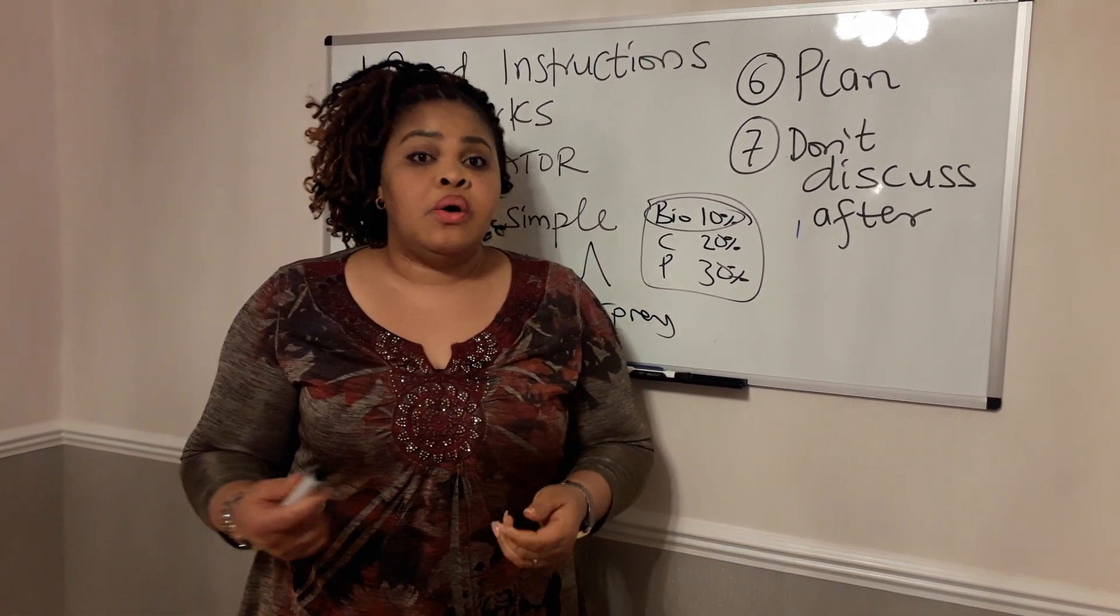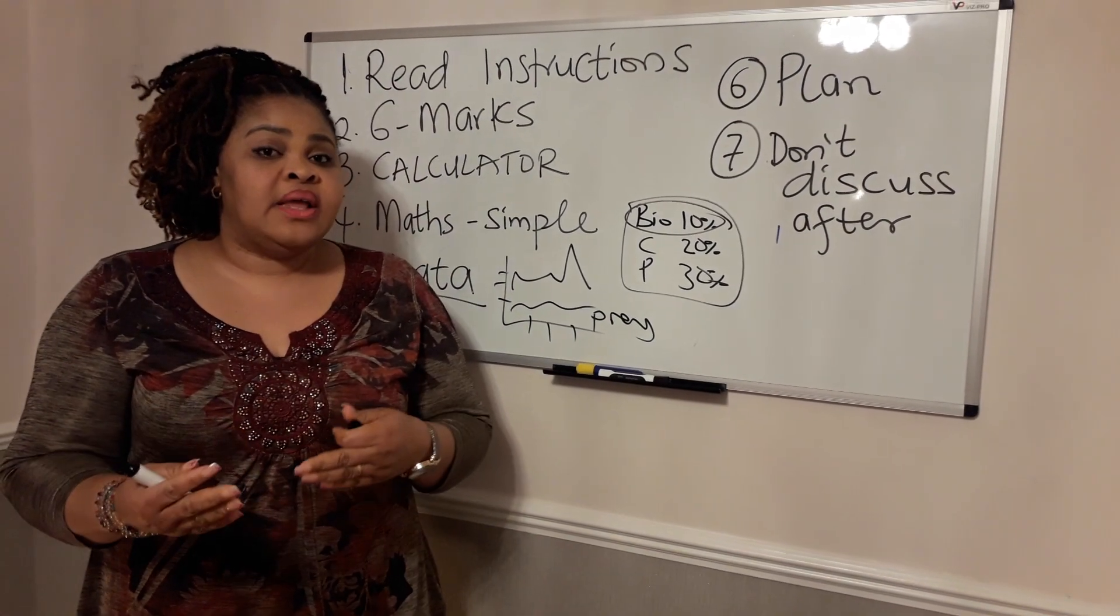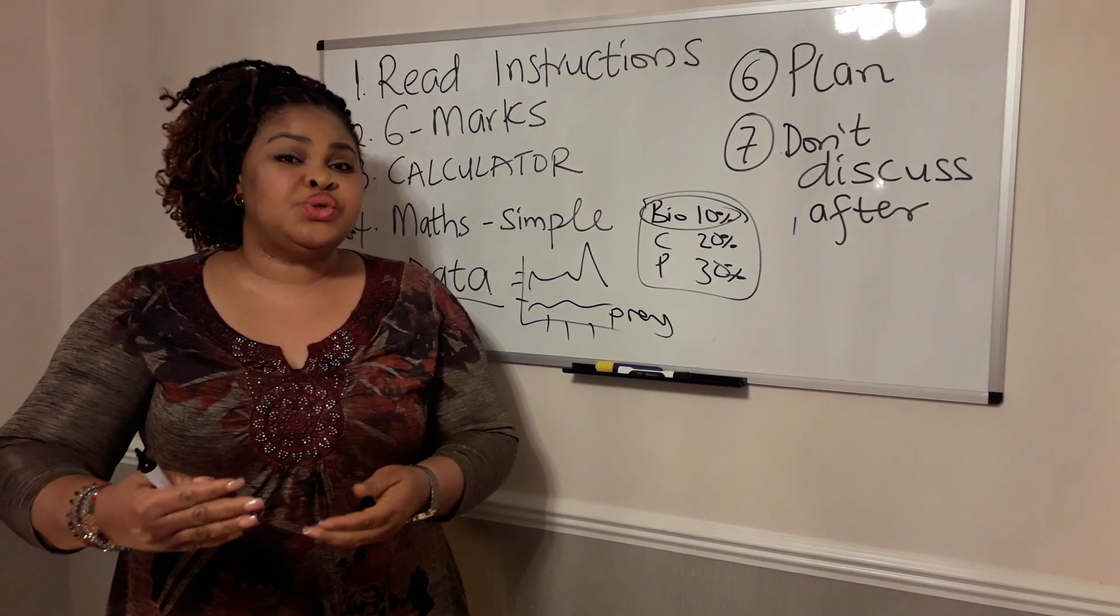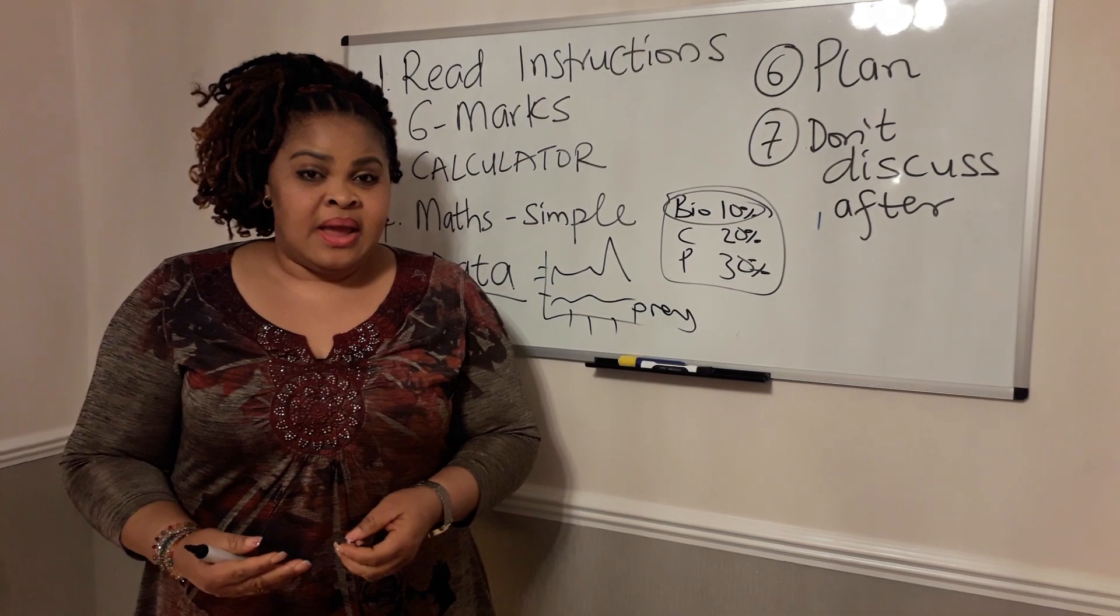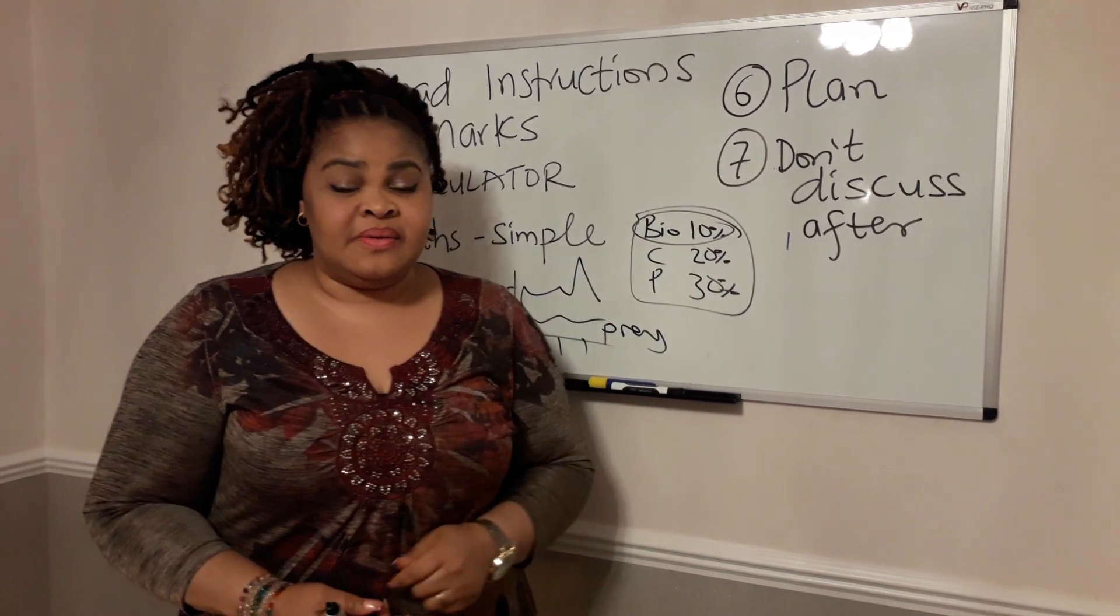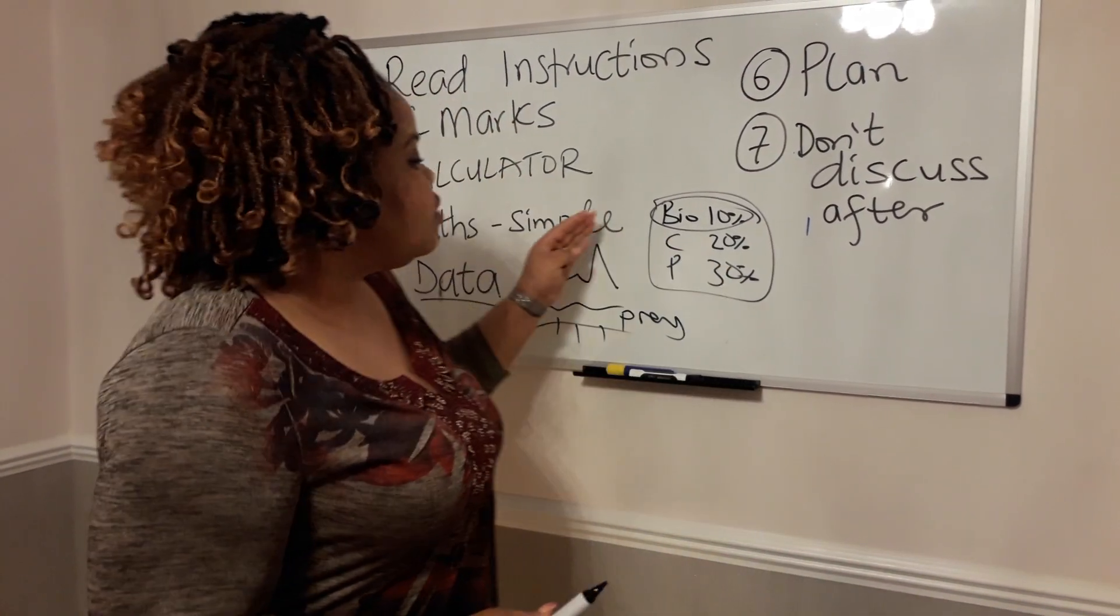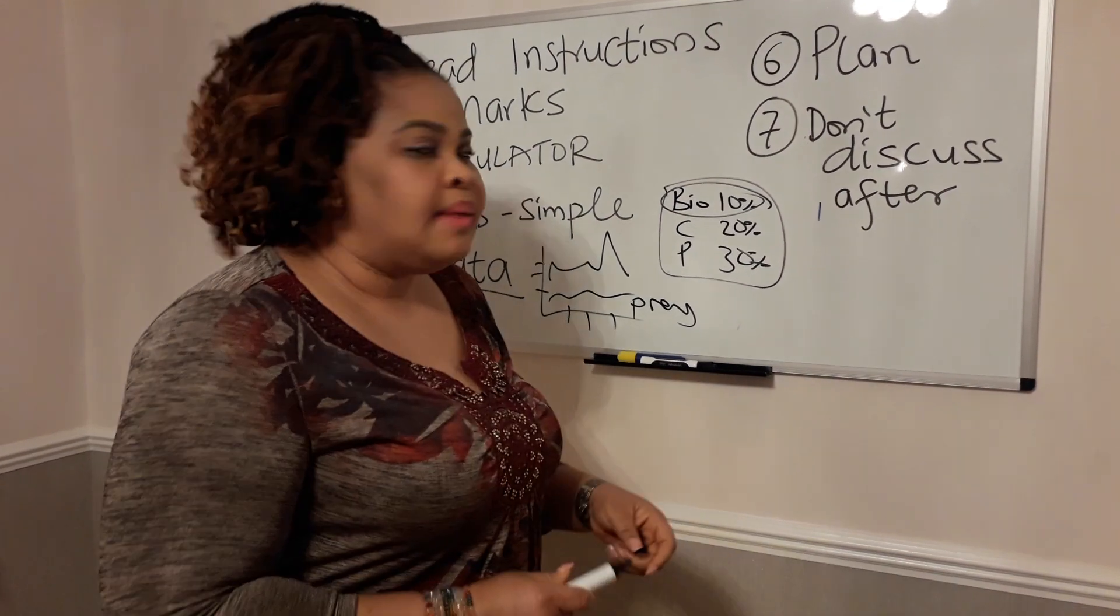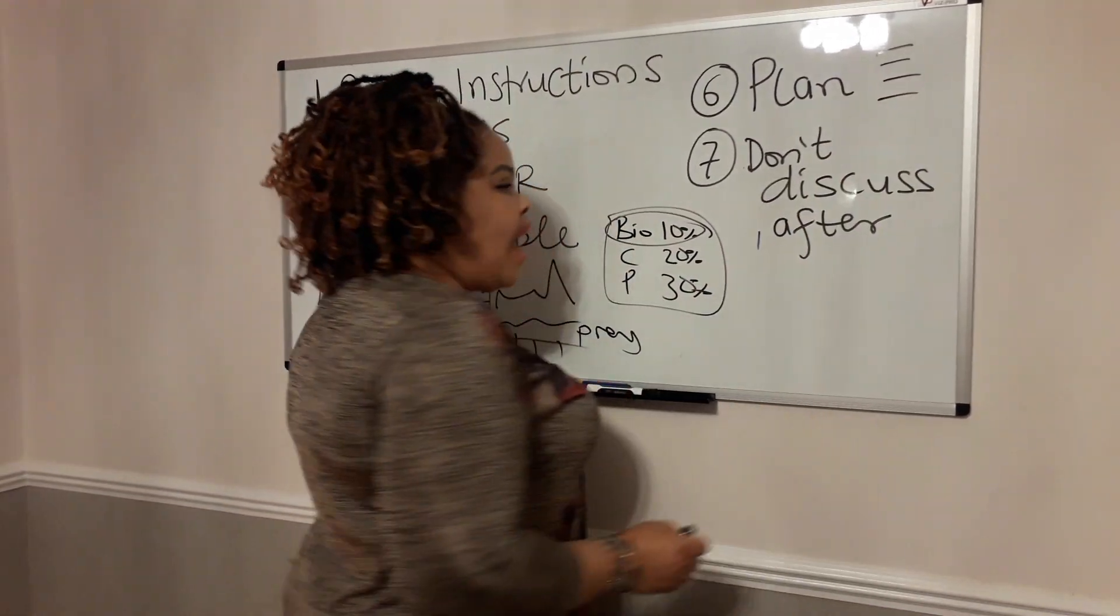Then number six is plan. Apart from the six mark question, those of you that are going to write the English paper as well or philosophy and ethics, you would know that there are some questions in English and philosophy that you're required to write for very long, like several pages. You want to plan that. You want to really plan that question before you start. One of the key keys to getting six out of every six mark question that I talked about in my video is you plan your response, you plan your answer.